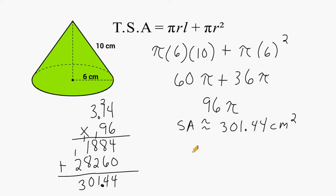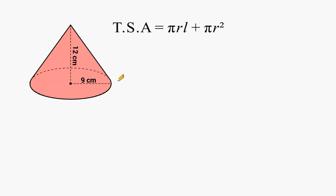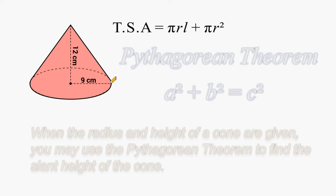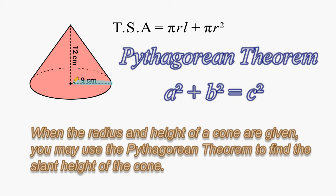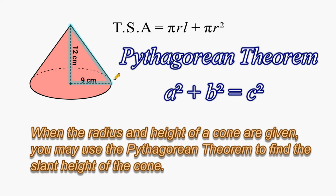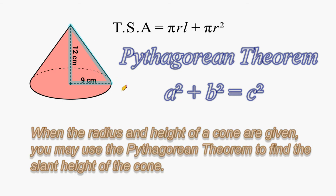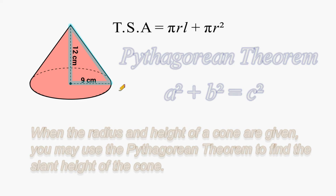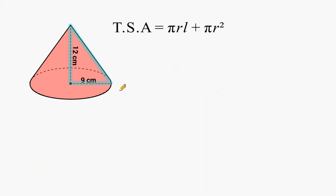Now let's do an example when the slant height is not given. In this problem, the slant height is not provided, so we have to use the radius of the circle and the height of the cone to determine the slant height using the Pythagorean theorem. The radius and the height of the cone form a right triangle with the slant height of the cone.